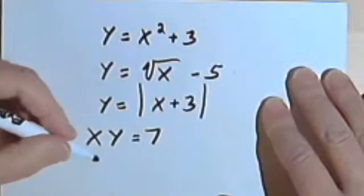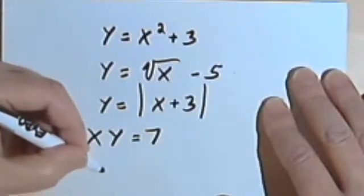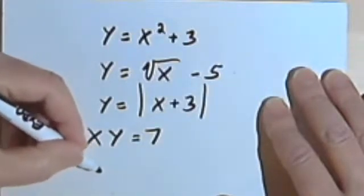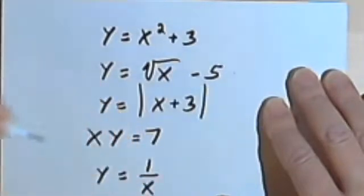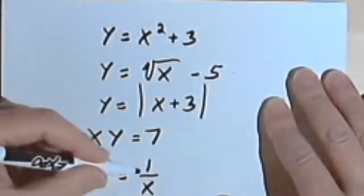The next one is a little bit tricky. In general, you can't have a variable in the denominator of a fraction, like y equals 1 over x. But I have to talk about that for a second.